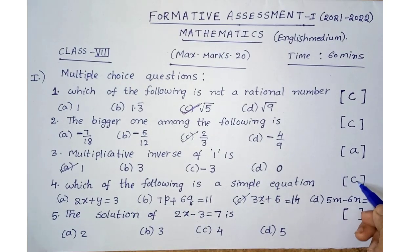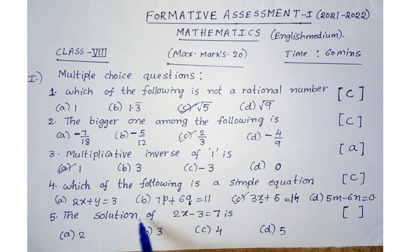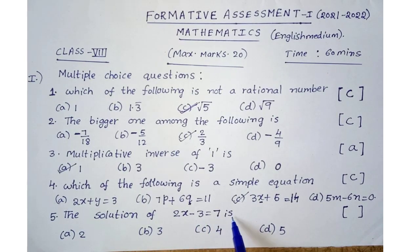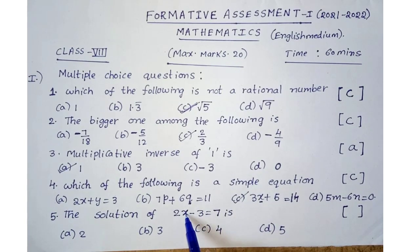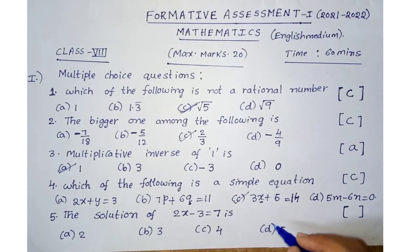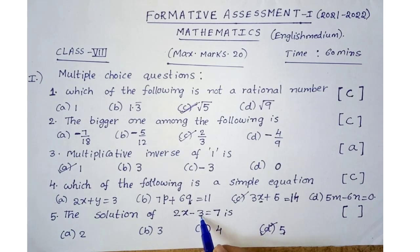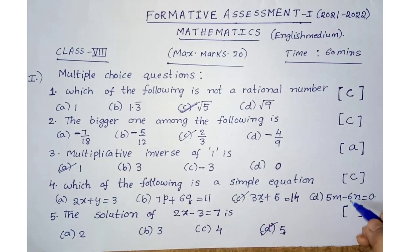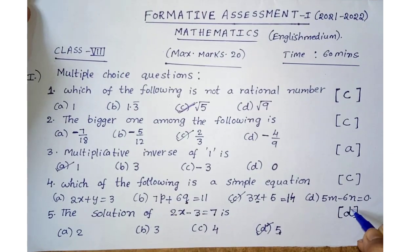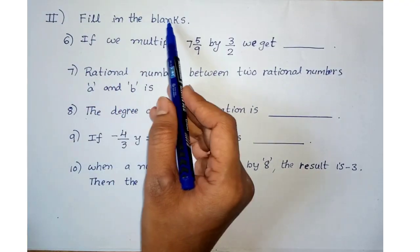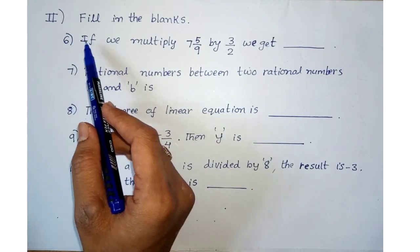Fifth one: the solution of 2x − 3 = 7 is? We need to substitute a number for x. Option D says x = 5. Substituting: 2 × 5 = 10, and 10 − 3 = 7. That matches, so x = 5. The answer is option D.